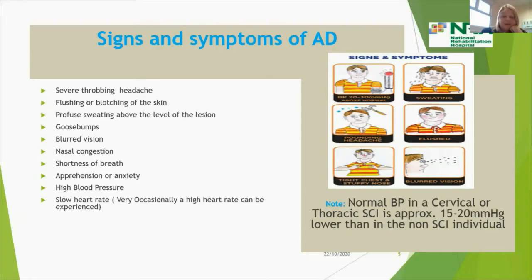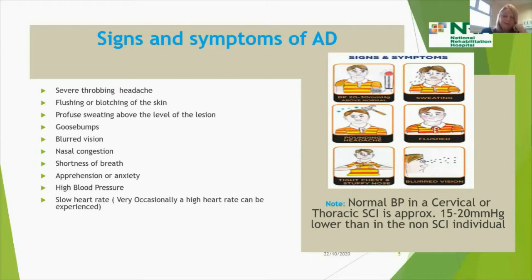In darker skin, flushing and blotching is not as evident, so people should look out for goosebumps and sweating. Other symptoms include blurred vision, nasal congestion, shortness of breath, and apprehension or anxiety. People have described a feeling of impending death. High blood pressure is present — characterised by a sudden increase — along with a slow heart rate, though a fast heart rate cannot be ruled out in some people.